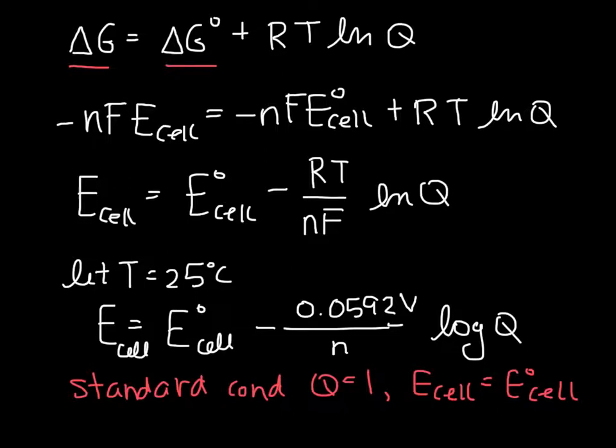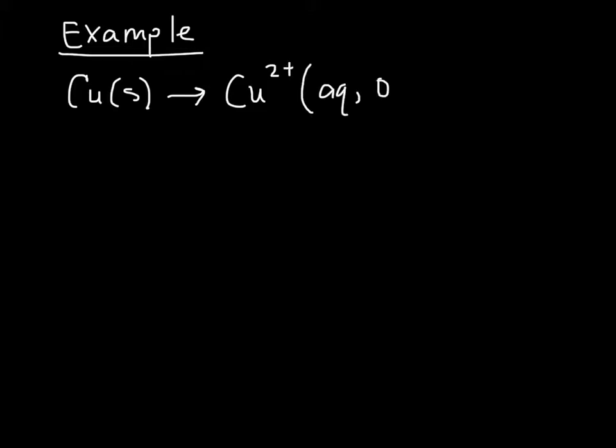Let's look at an example of how this works to actually calculate the real cell potential. We want to find the cell potential based on the following half reactions. We have copper solid going to Cu²⁺ aqueous with a concentration of 0.01 molar.